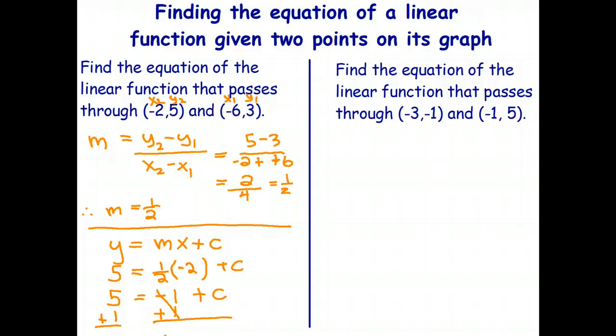Okay, welcome back students. So in this case, we're trying to find the equation of the linear function that passes through these two points. So once again, the basic formula is y equals mx plus c. I need to first calculate the gradient and then use a bit of algebra to solve for the y-intercept and then just put those numbers in for m and c. So let's get started.